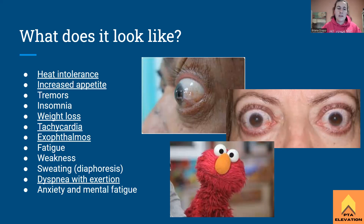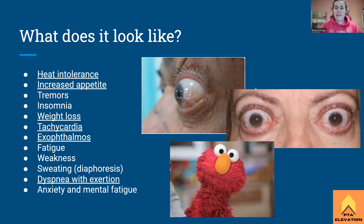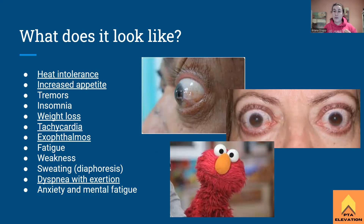Exophthalmos is where we have bulging eyes. We can see from the front that the eyes are completely bulging out. A helpful mnemonic: think of Graves' disease like Elmo, with the eyes popping out. So think Graves' disease — Elmo — eyes popping out. That's our exophthalmos, and it's just because we're doing too much.